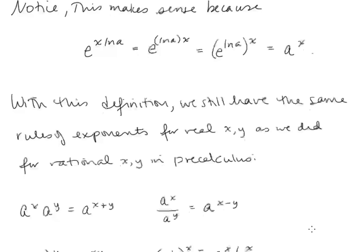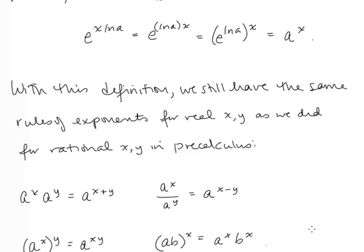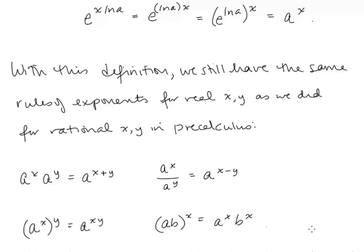With this definition for a to the x, we still have the same rules of exponents for real x and y values as we did for rational x and y values: a to the x times a to the y is a to the x plus y; a to the x over a to the y is a to the x minus y; a to the x all taken to the y power is a to the xy power; and the quantity ab to the x equals a to the x times b to the x.